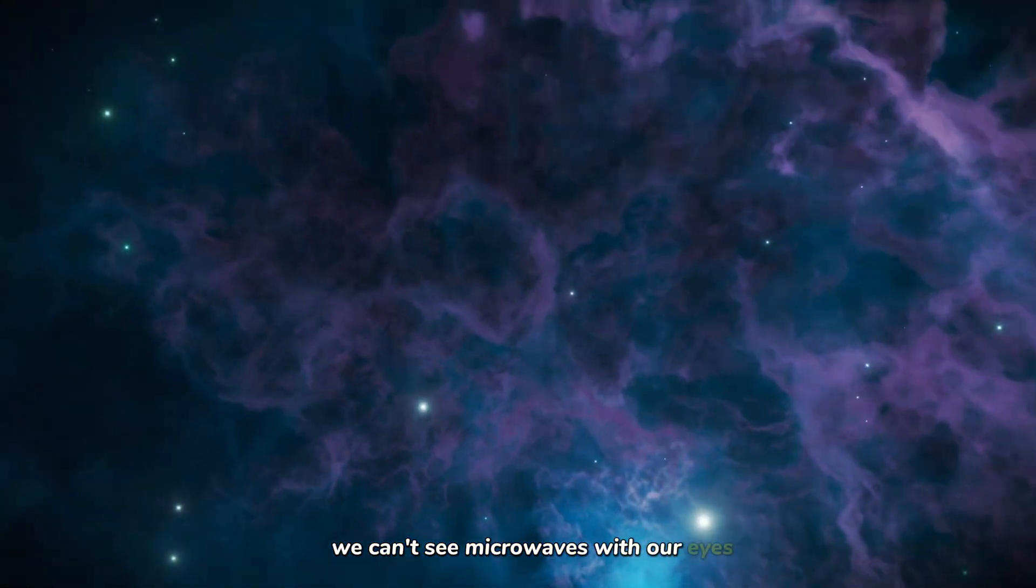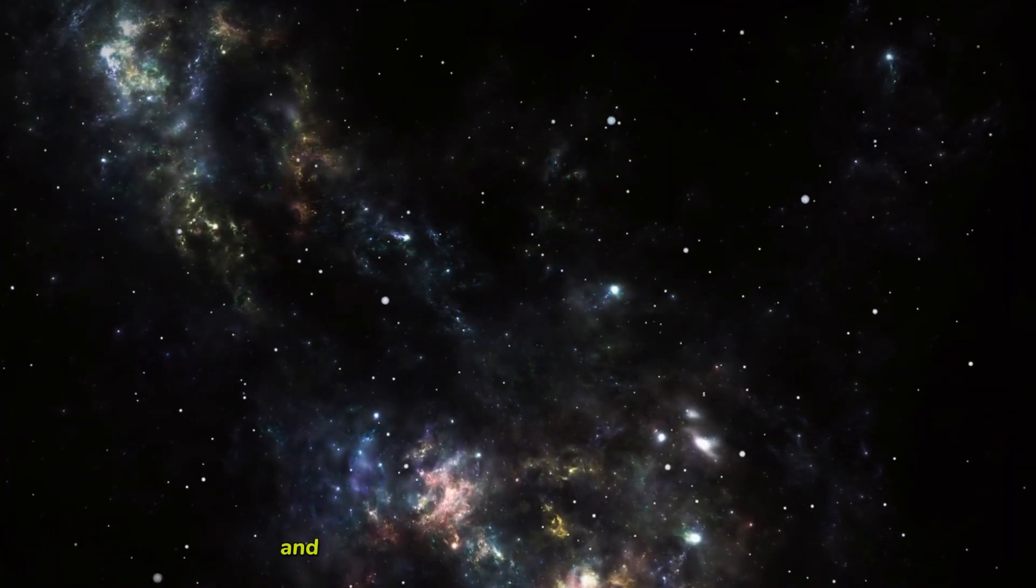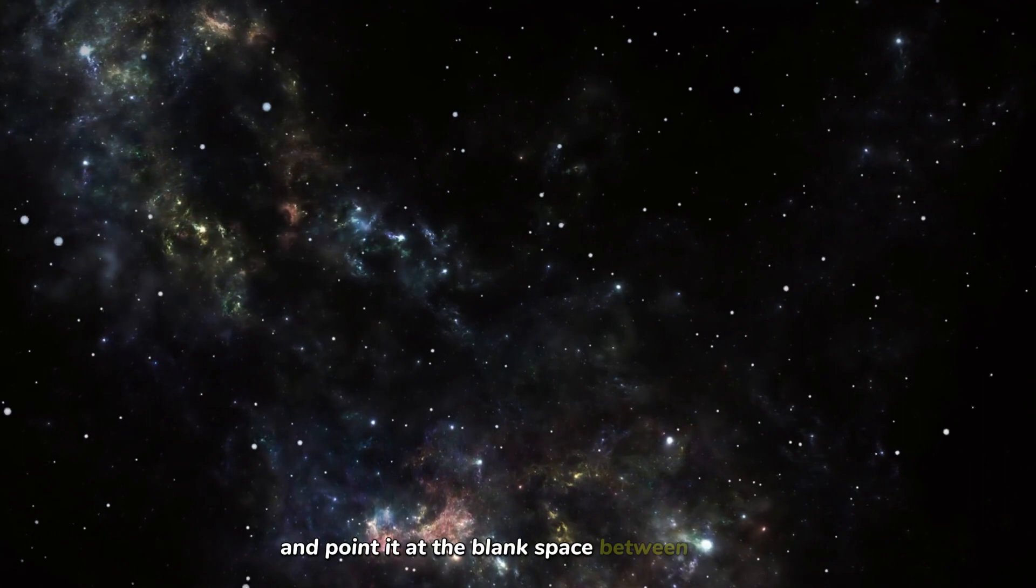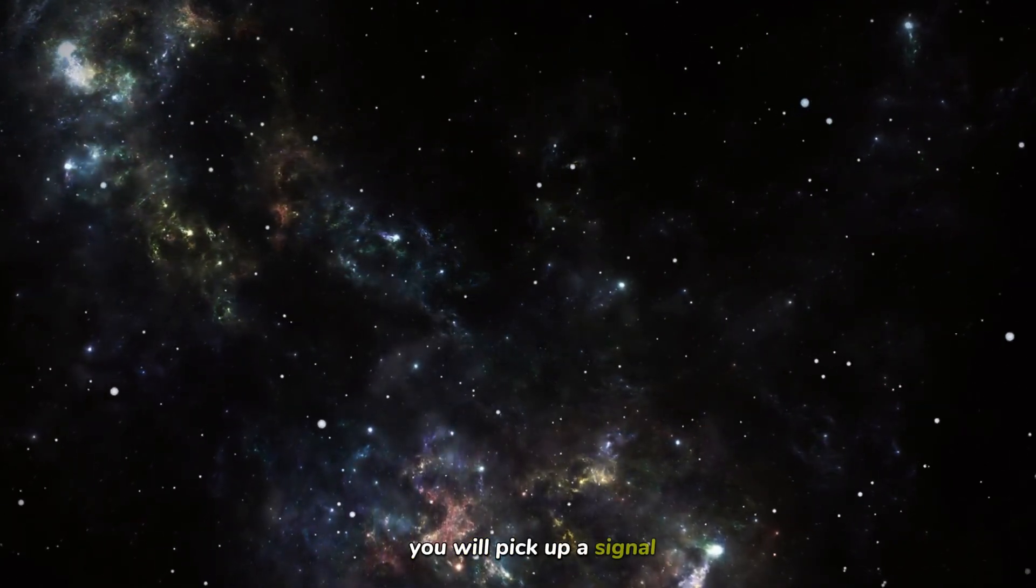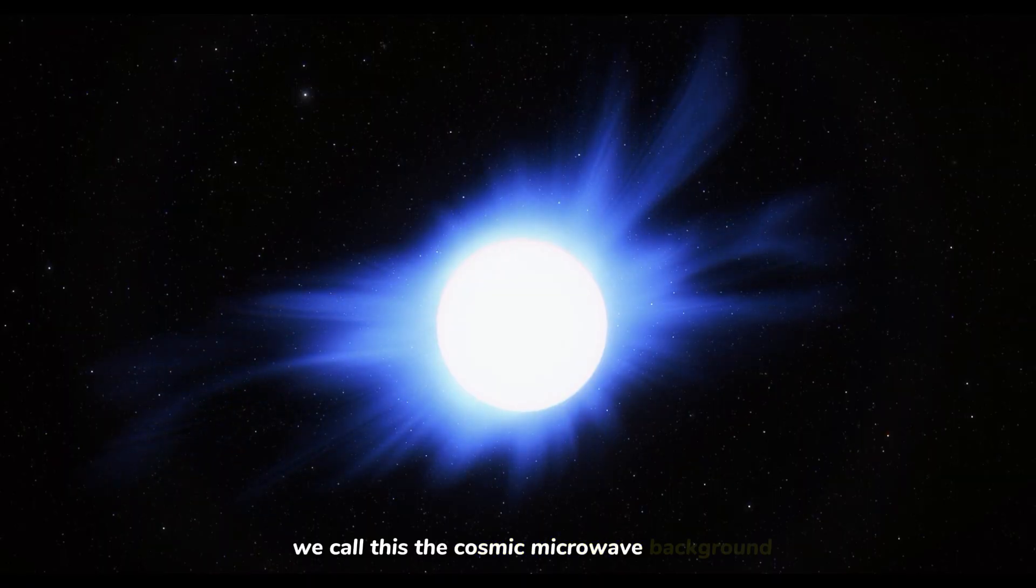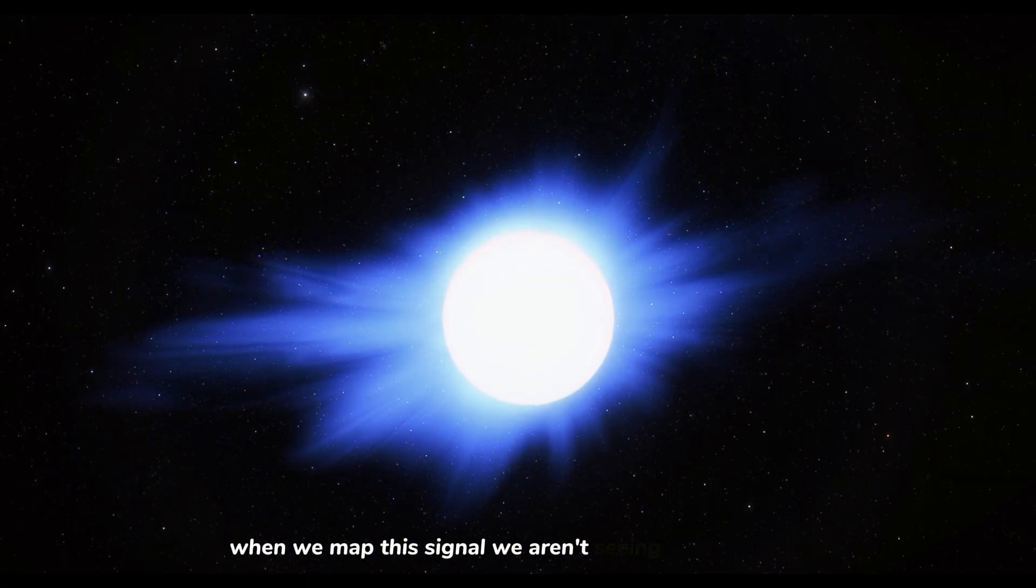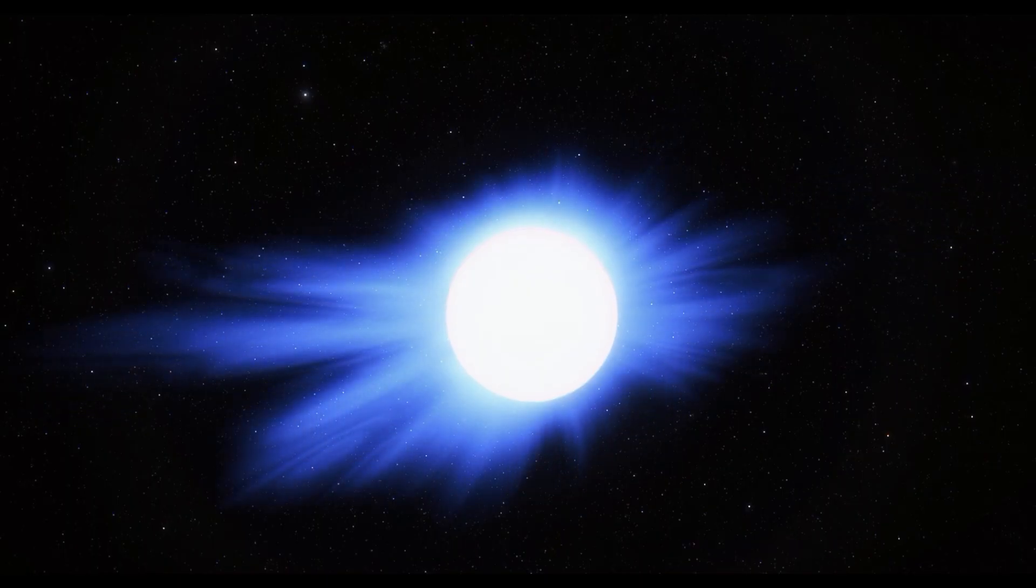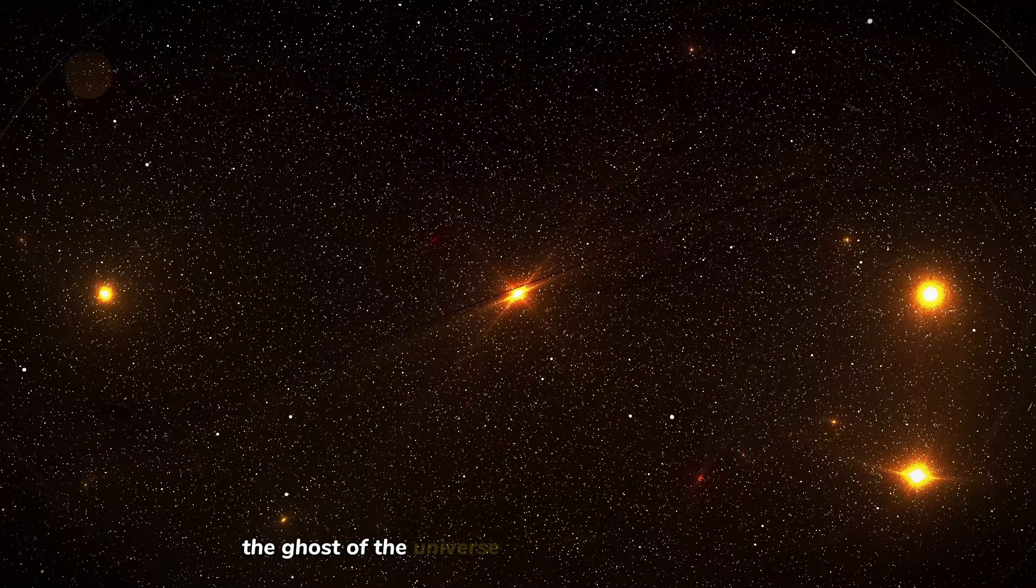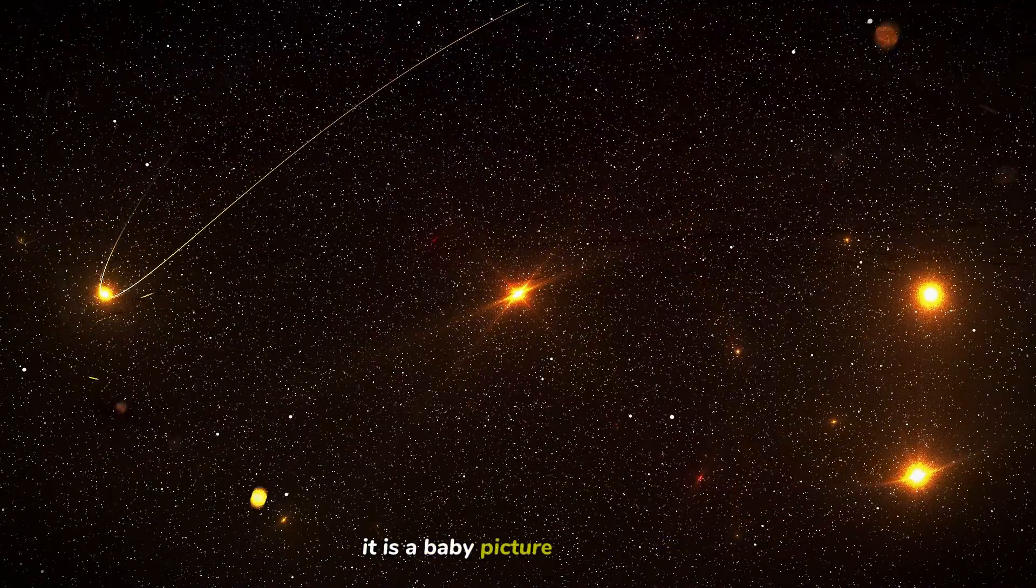We can't see microwaves with our eyes, but we can build machines that do. If you turn on a radio telescope and point it at the blank space between the stars, you will pick up a signal. A faint, constant hum. We call this the cosmic microwave background, or CMB. This is the wall. When we map this signal, we aren't seeing galaxies or stars. We are seeing the ghost of the universe as it was 13.8 billion years ago. It is a baby picture of the cosmos.